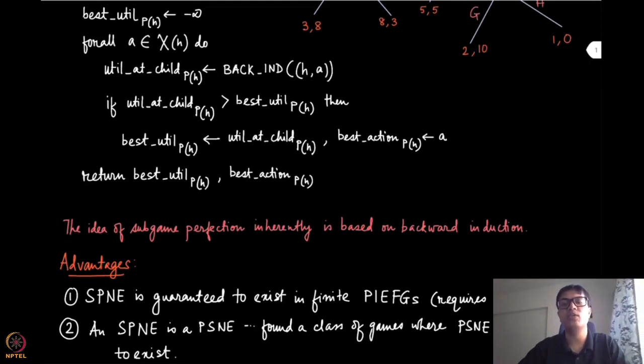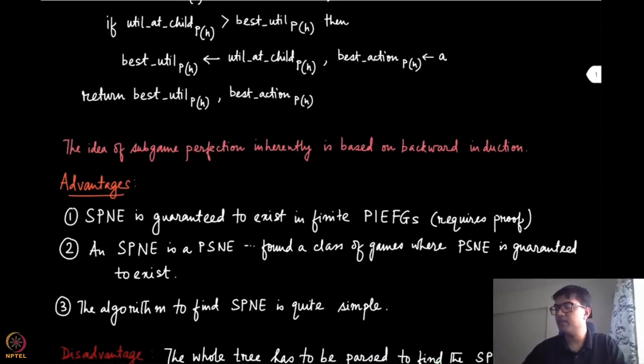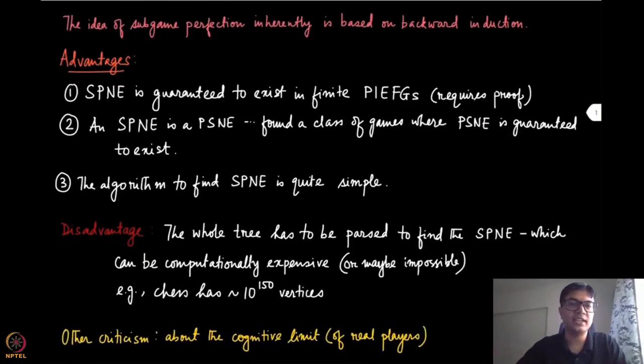Now there are several advantages for this kind of perfect information extensive form games. The first thing that we observe is that subgame perfect Nash equilibrium is guaranteed to exist in finite PI-EFGs. You can argue it formally, but the intuition is that it is basically based on the fact that you have an algorithmic way of showing that the subgame perfect Nash equilibrium exists, and the algorithmic way is the backward induction algorithm. You can show that this will always converge to a subgame perfect Nash equilibrium.